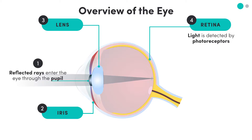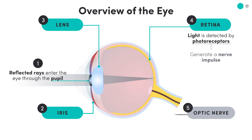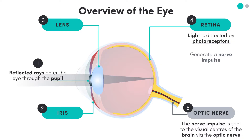Specifically, we refer to these receptors as photoreceptors, because they're able to sense light. When these photoreceptors are activated by incoming light waves, they generate a nerve impulse that is then sent to the visual centers of the brain via the optic nerve. In the brain, these messages are interpreted as images.